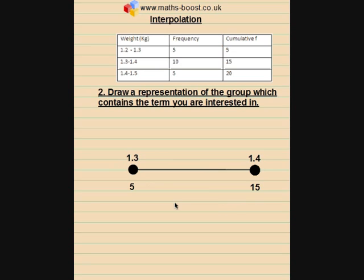So I'm going to concentrate on that middle group and draw a representation with the boundaries. So the lower boundary is 1.3 kilograms, the upper boundary 1.4. And it starts at the fifth term and ends on the fifteenth.